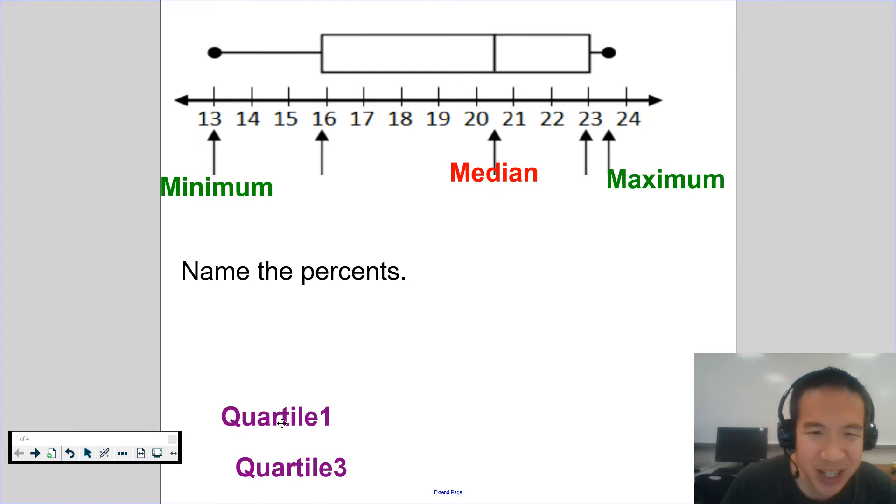Where will you find quartile one? That is the median of the lower half. If this is the median, the halfway point, everything to the left is the lower half. So this right here represents the quartile.